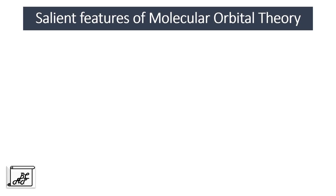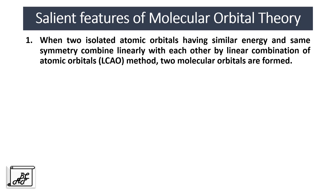Let's see what are the salient features of Molecular Orbital Theory. The first is: when two isolated atomic orbitals having similar energy and same symmetry combine linearly with each other by linear combination of atomic orbitals, two molecular orbitals are formed. Whenever two atomic orbitals combine with each other, two molecular orbitals are formed.